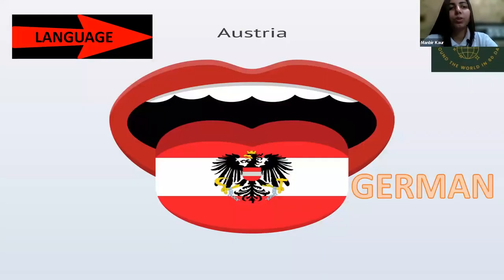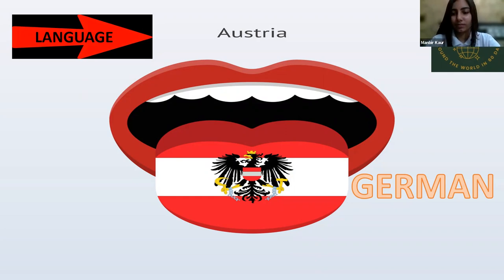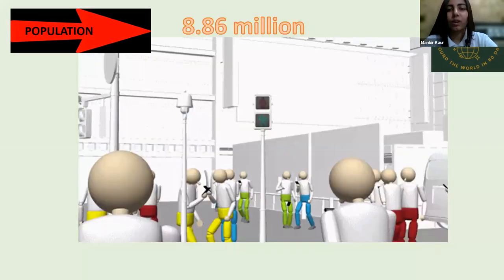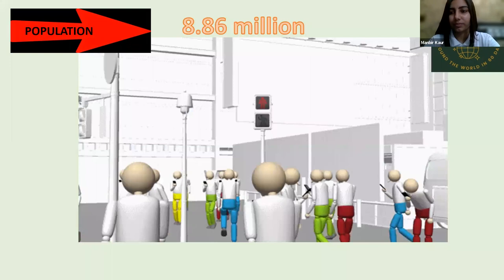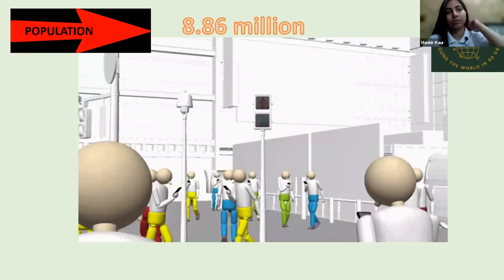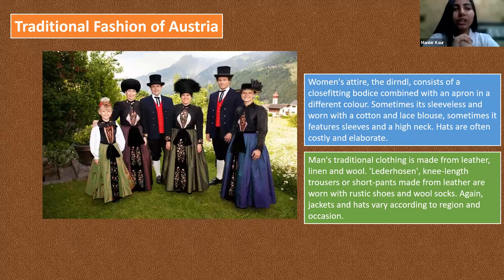The official language of Austria is German. Now talking about population — around 8.86 million people are living in Austria.